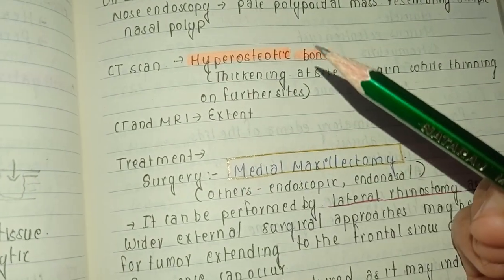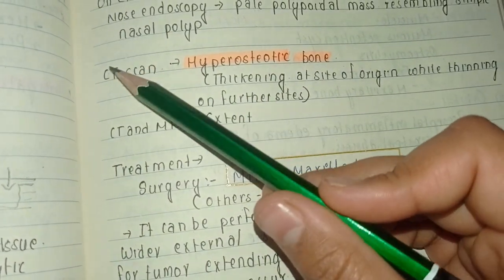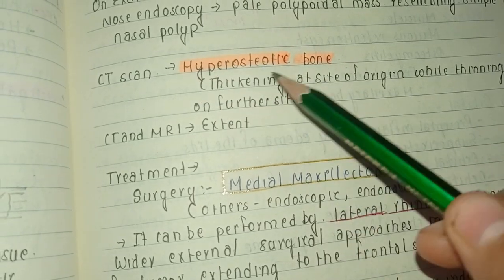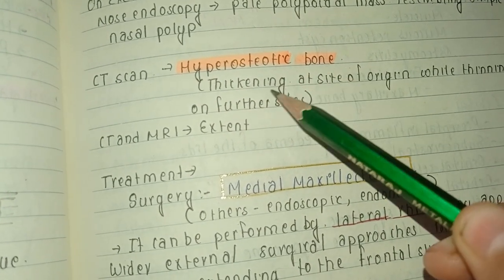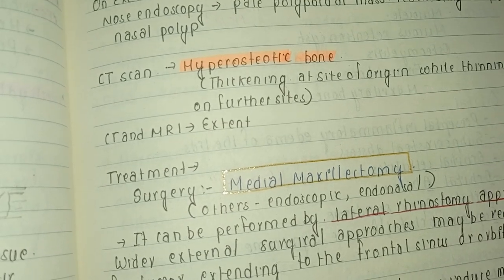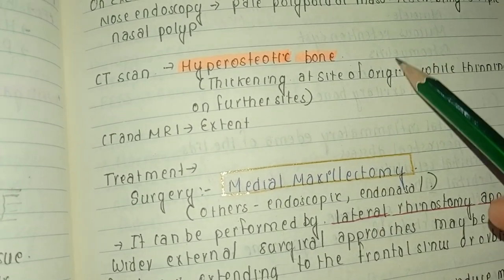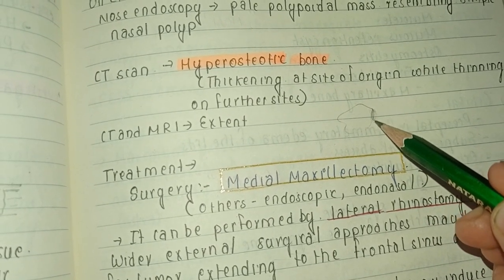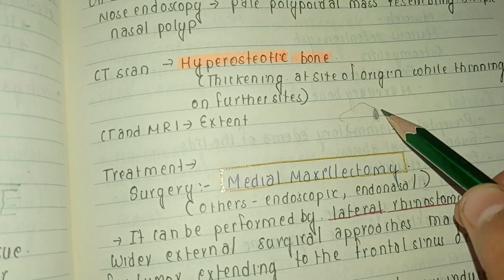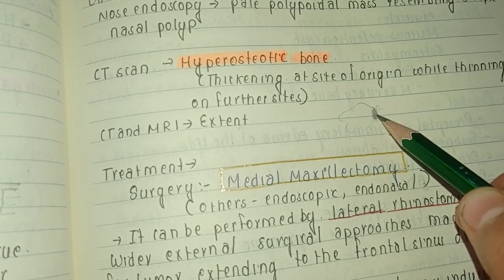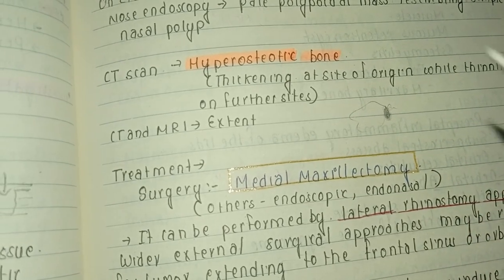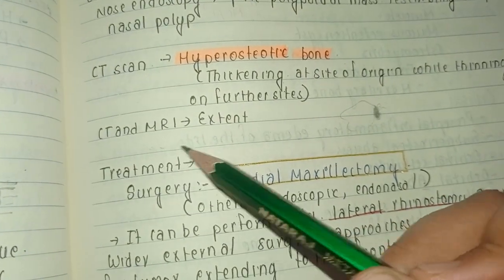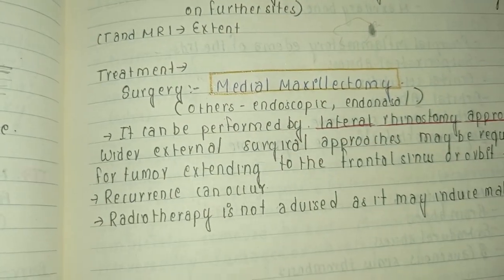For diagnosis, CT scan will be the best choice. On CT scan, we see hyper-osteotic bone, which is thickening at the site of origin, while thinning on the further side. Where the tumor originates, the bone will appear more dense — hyper-osteotic. For assessing the extent of this papilloma, both CT scan and MRI can be used.